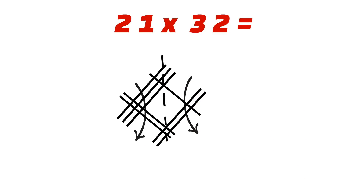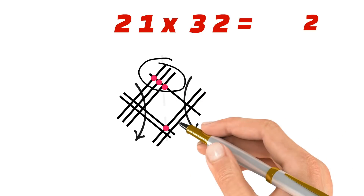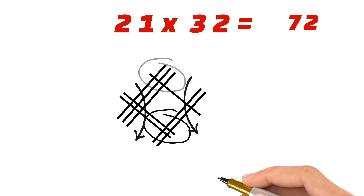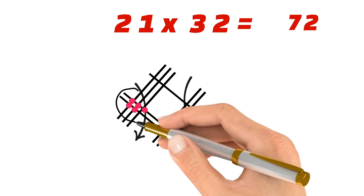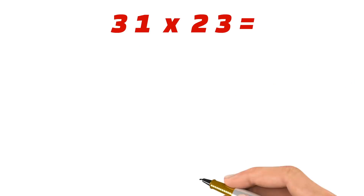Let's start counting the number of intersection points from the right-hand side. On the right, there are two intersection points — that becomes the units place of your answer. For the center group, there are three intersection points above and four below, so total is seven — that becomes the tens digit. For the last group, there are six intersection points — that becomes the next digit. So the answer for 21 × 32 is 672. Pause the video and try this out, then check your answer.